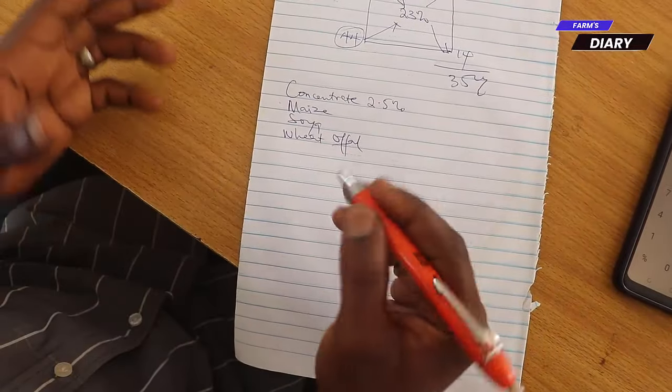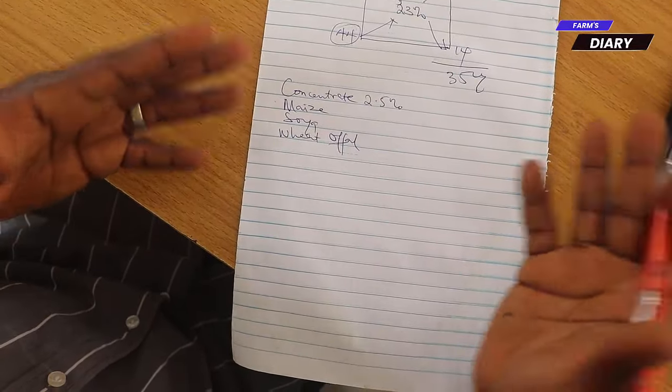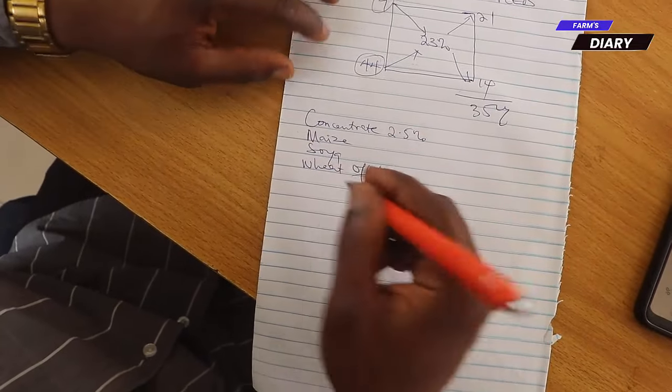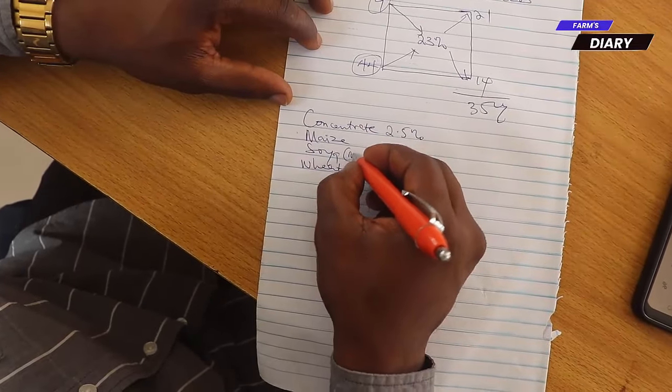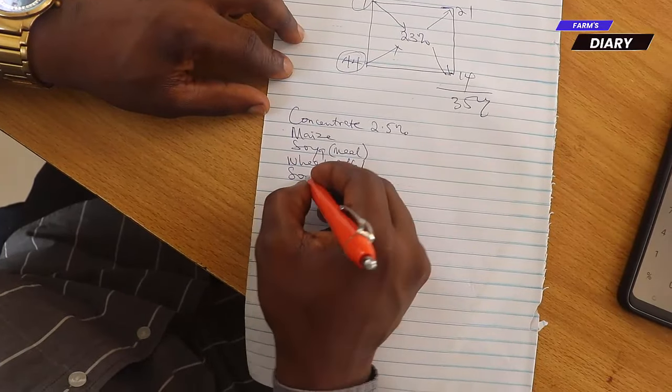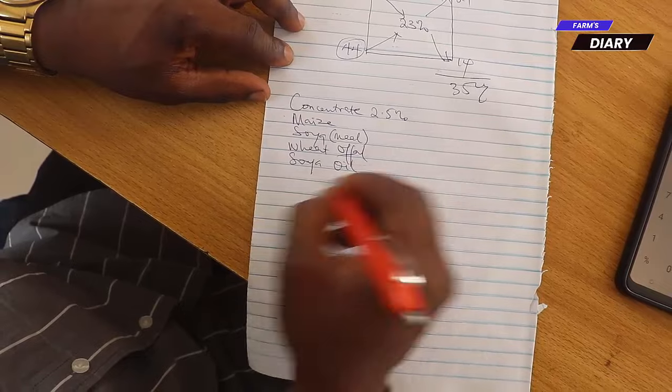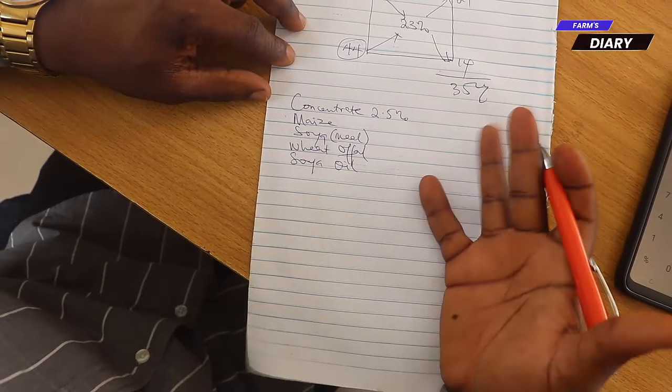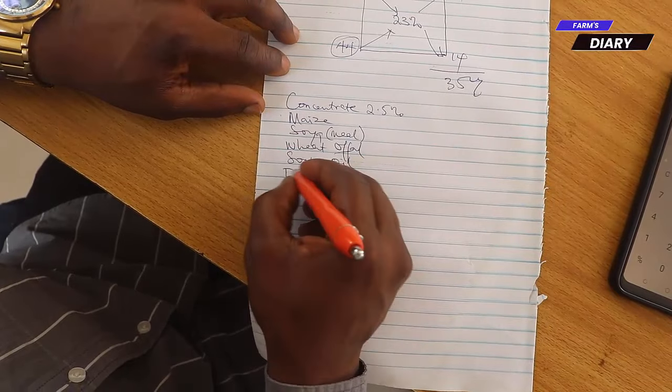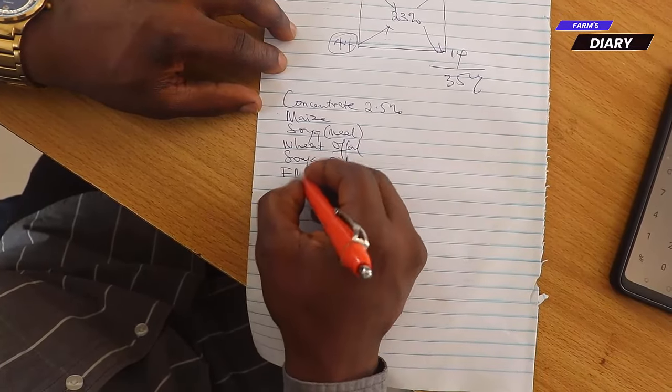And again, we are going to be adding some other things. Sometimes if you are putting ingredients together, you need to bind it together. And this soya is the meal, the soya bean meal. Then you have soya oil. Sometimes people can use vegetable oil. It will still give you the same result. Then you have what we call, currently we call it, FMR. That FMR means fish meal replacer.